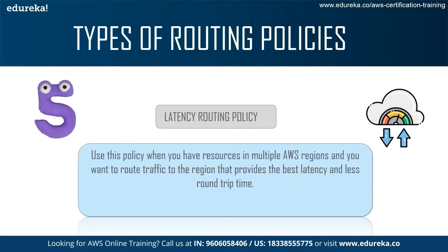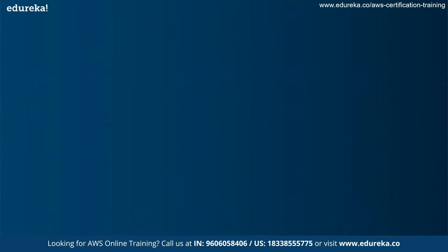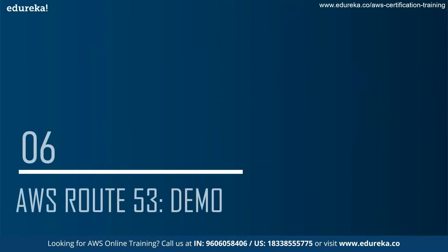Finally, the Latency Routing Policy can be used when you have resources in multiple AWS regions and you want to route traffic to the region that provides the best latency and least route time. If a region provides the best latency, you route your website traffic there.